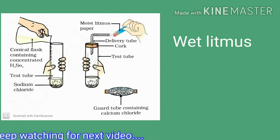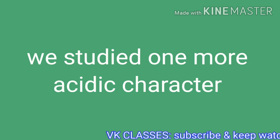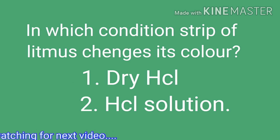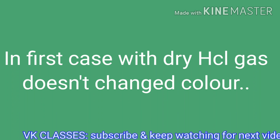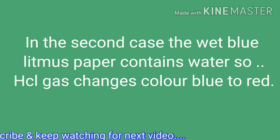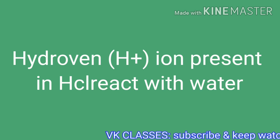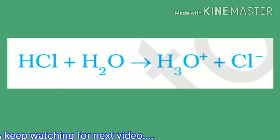In which case does the litmus paper change its color? With the help of this activity, we infer one more acidic character: what happens with dry HCl gas versus HCl in solution. In the first case, dry HCl gas doesn't change the color, but in the second case, wet blue litmus paper changes to red.